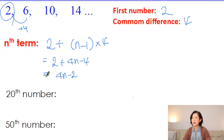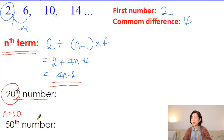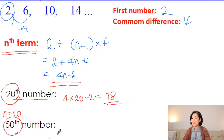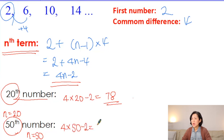All you need to do is substitute the number into n. For the 20th number, put n = 20: 4 times 20 minus 2 equals 78. So the 20th term is 78. For the 50th number, n = 50: 4 times 50 minus 2 is 200 minus 2, which is 198.